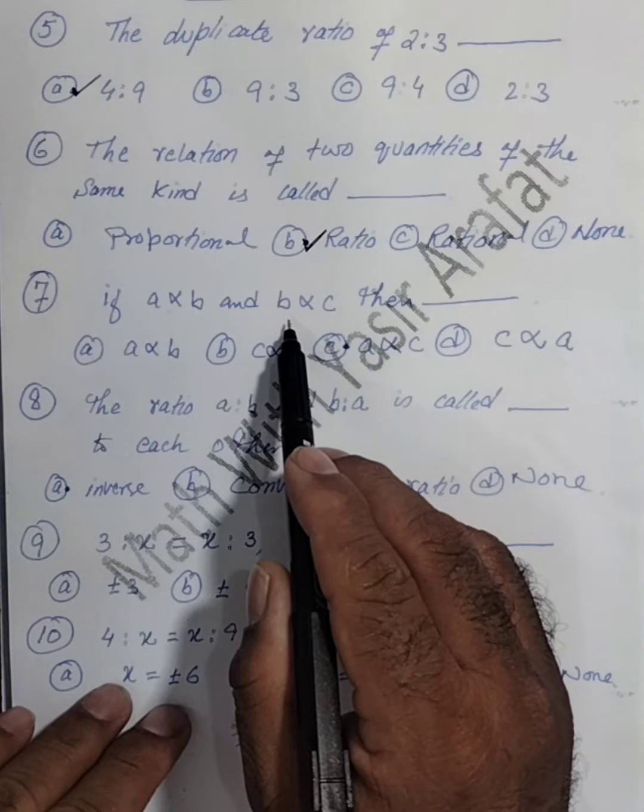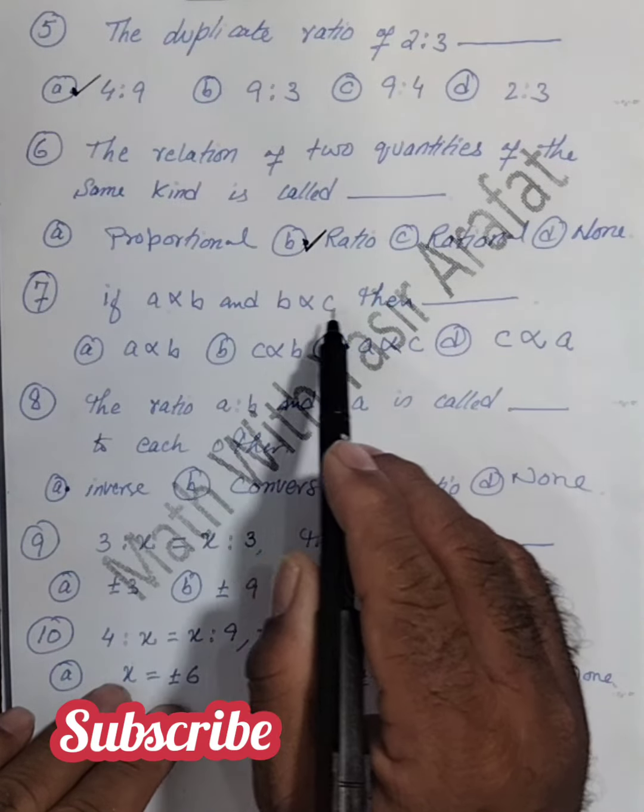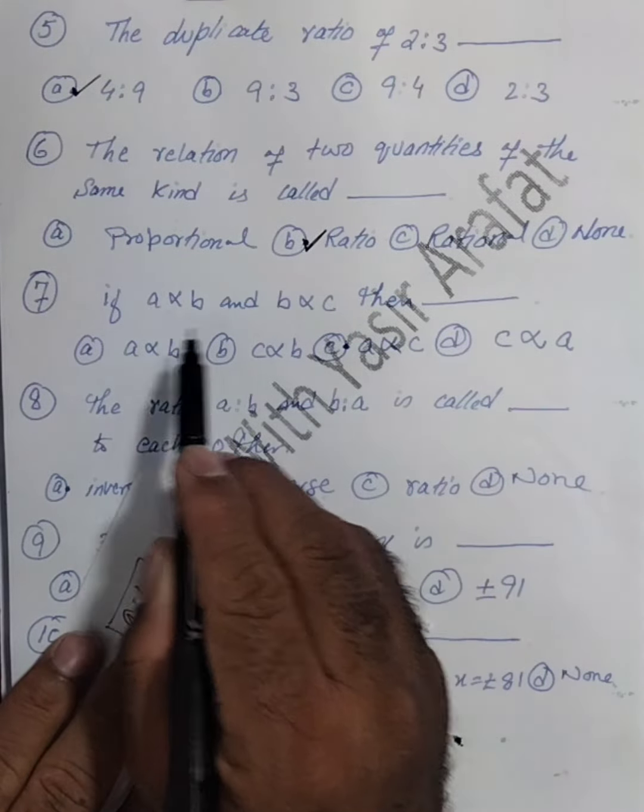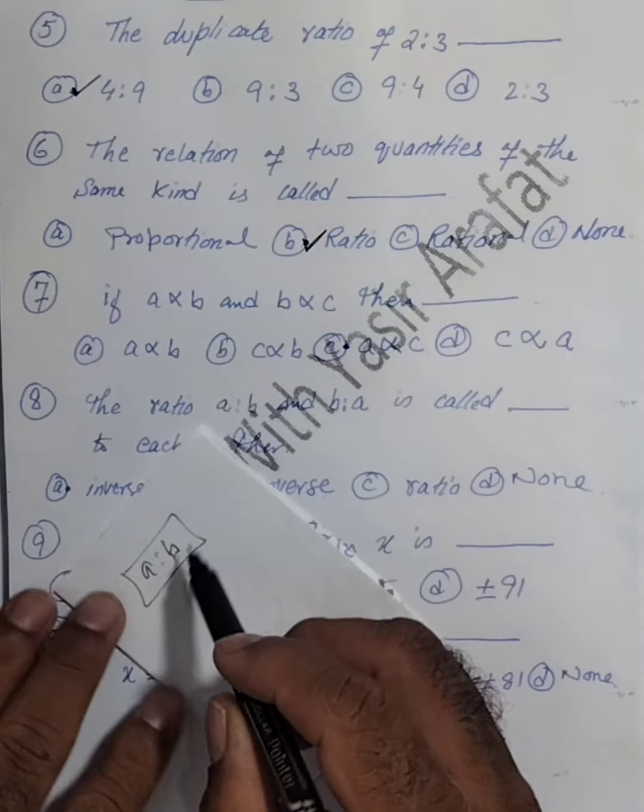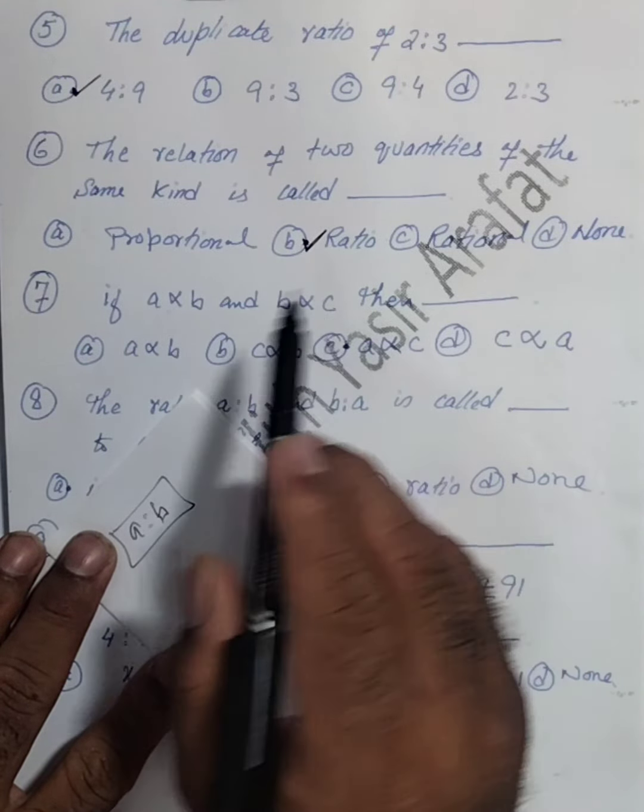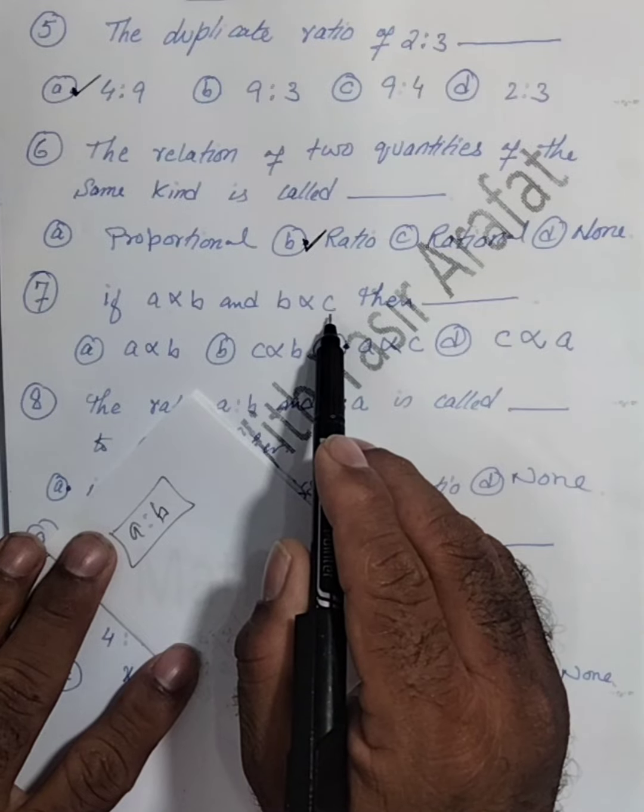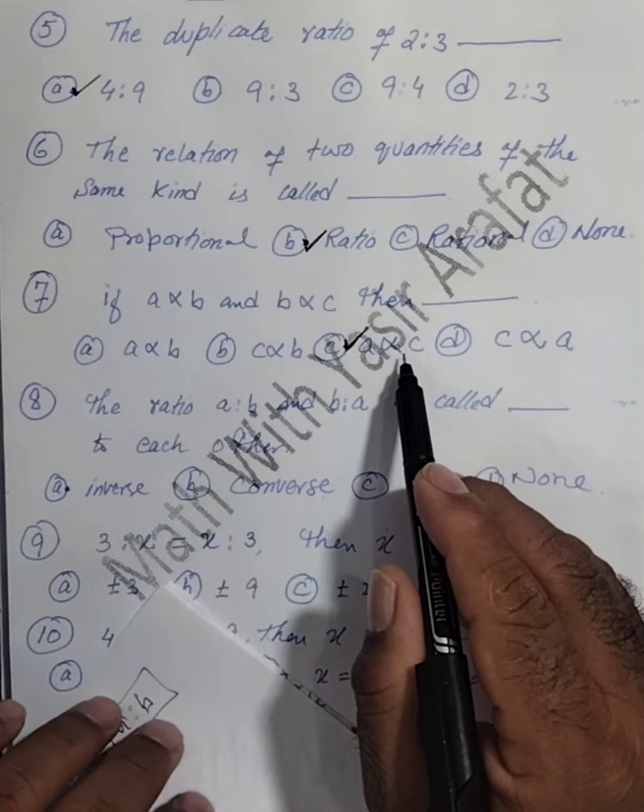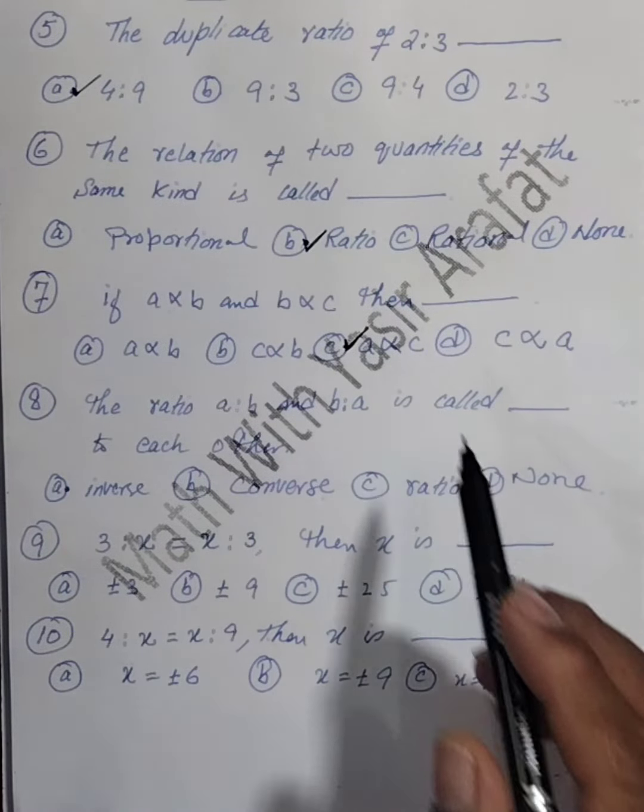If a cross b and b cross c, then a cross c. a cross b and b cross c, then a cross c. b is common. This is here a cross b and b cross c, then a cross c. It is the correct option that is a cross c. The correct option is c.